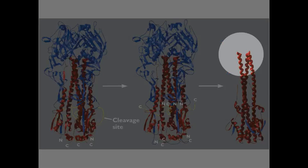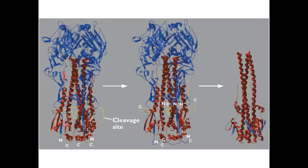Once again, the cleavage is needed to expose that fusion peptide, and the low pH then brings it to the top of the molecule so that it can insert into the cell membrane.